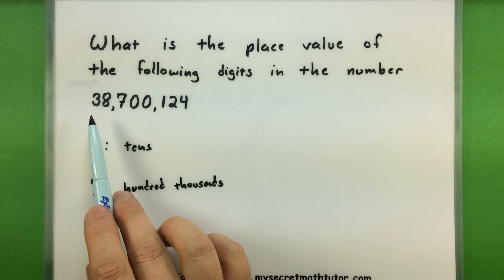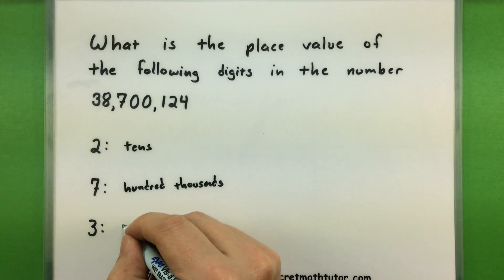And finally we have the 3, way at the end there, so it's past the millions, it's in the ten millions.